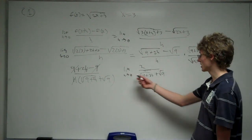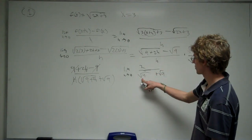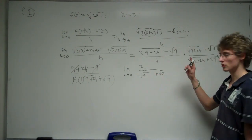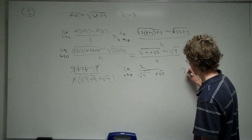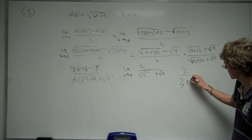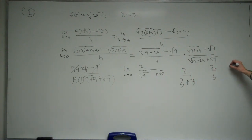Now, from here, we can plug in 0 for h, it's going to cancel this term here. We get the square root of 9 plus the square root of 9. The square root of 9 is 3, so we're going to get 3 plus 3 in the bottom there, so we get 2 over 6, which can be reduced to 1 third.